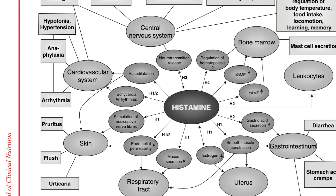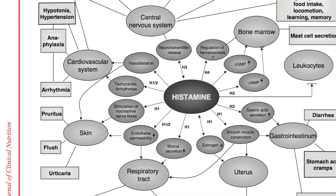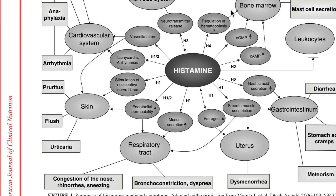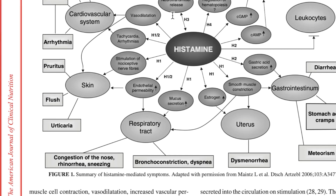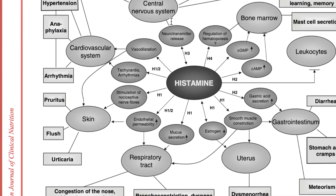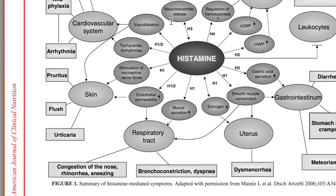Histamine also regulates body temperature. I've seen patients sitting in my clinic in the middle of summer in Sydney — which can be 35 degrees — wearing a ski parka because they're so cold. Histamine is also involved in food intake and appetite control, as well as learning and memory. So we can see that histamine can impact so many different tissues and organs in the body, which is why it causes so many different symptoms.